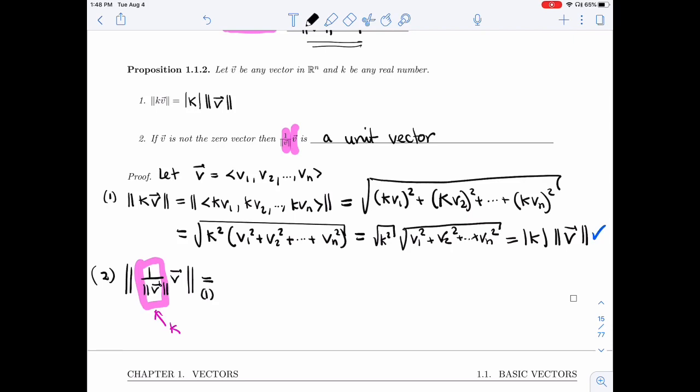So by property 1, I have absolute value of K times the length of V.